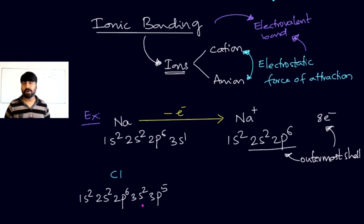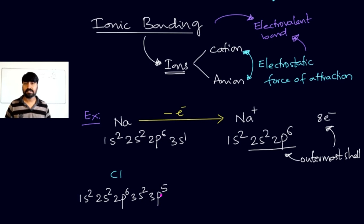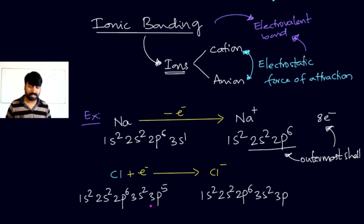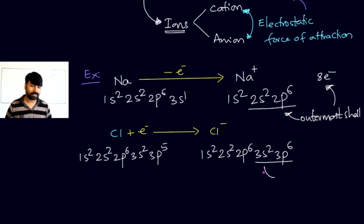When one electron is added to the 3p orbital of chlorine, it becomes 3p⁶. The resulting Cl⁻ has configuration 1s² 2s² 2p⁶ 3s² 3p⁶. The outermost shell is 3s² 3p⁶, containing 2 + 6 = 8 electrons. Cl⁻ is therefore stable. Comparing Cl and Cl⁻, the Cl⁻ ion is stable.